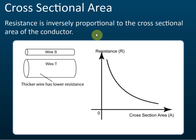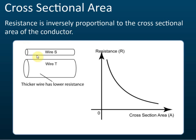The second factor that affects resistance is the cross-sectional area. Here we can see two conductors: one has a small cross-sectional area and the other has a bigger cross-sectional area. Resistance is inversely proportional to the cross-sectional area of the conductor, meaning that the larger the cross-sectional area, the lower the resistance.